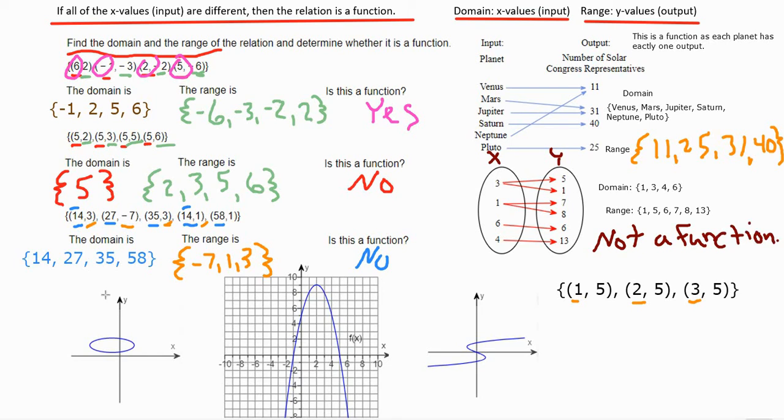And for the graphs down below, we're going to use what's called a vertical line test. If anywhere on the graph we can draw a straight line that goes up and down and it crosses the graph more than once, it's not a function. So the first one there is not a function.